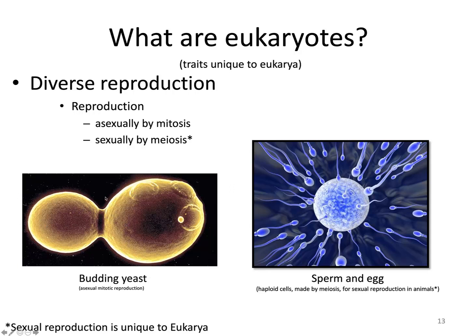However, eukaryotes can also reproduce sexually by meiosis, and meiosis and sexual reproduction are unique to the eukaryotes. Only eukaryotes reproduce sexually by meiosis. When you reproduce by meiosis, the copies of cells produced are genetically different from the parent cells — they go from a diploid cell to a haploid cell.